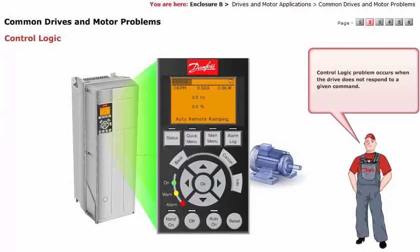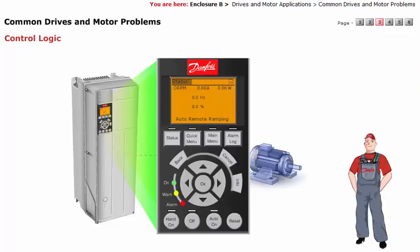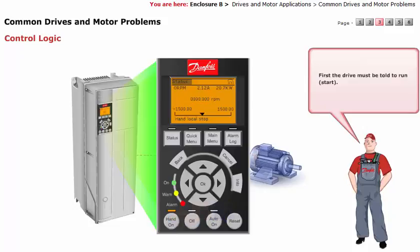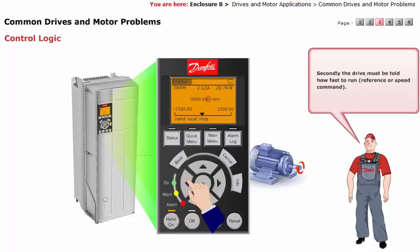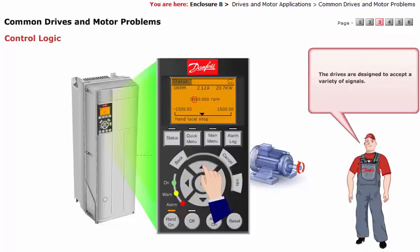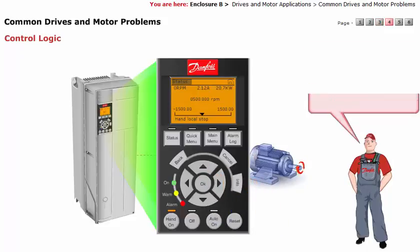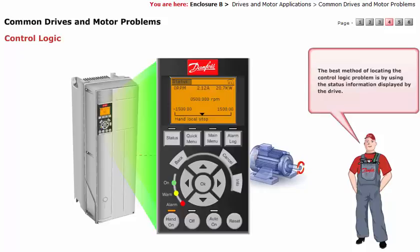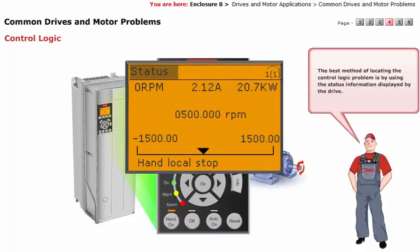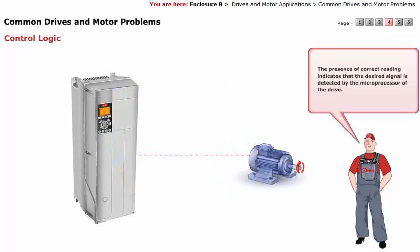A control logic problem occurs when the drive does not respond to a given command. There are two basic commands that must be given to any drive in order to obtain an output: first, the drive must be told to run; second, the drive must be told how fast to run. The drives are designed to accept a variety of signals. The best method of locating a control logic problem is by using the status information displayed by the drive. The presence of a correct reading indicates that the desired signal is detected by the microprocessor of the drive.